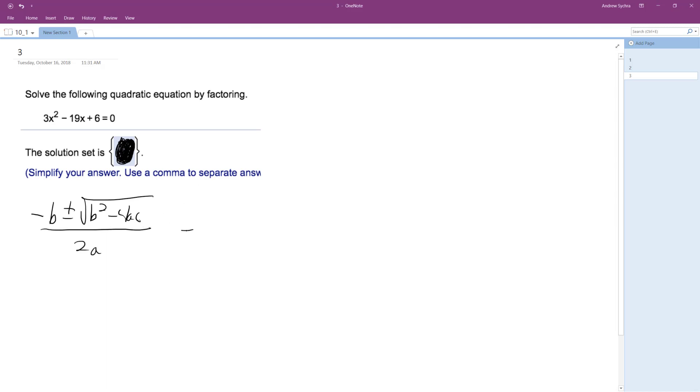And then what we're going to end up with here is opposite of b, which is negative negative 19, so we get 19 plus or minus square root of b squared, which is 19 squared, minus 4 times 3... b, a is 3, it's in front of the x, and then times c, which is 6. And all this all over 2a, which is 2 times 3.